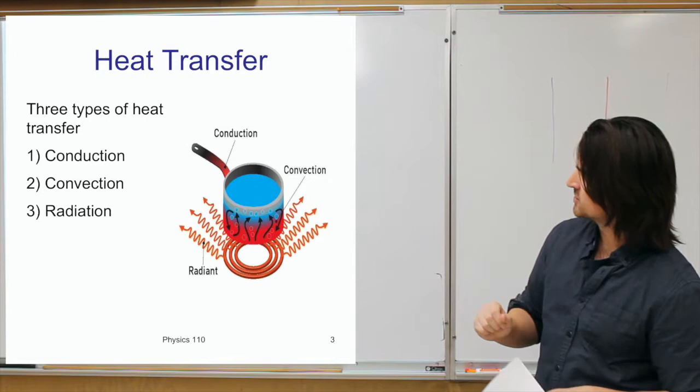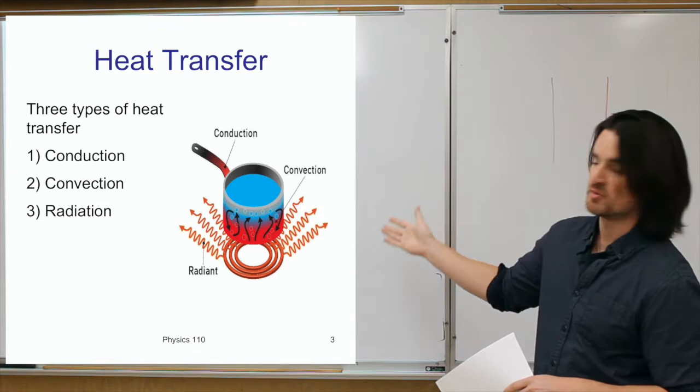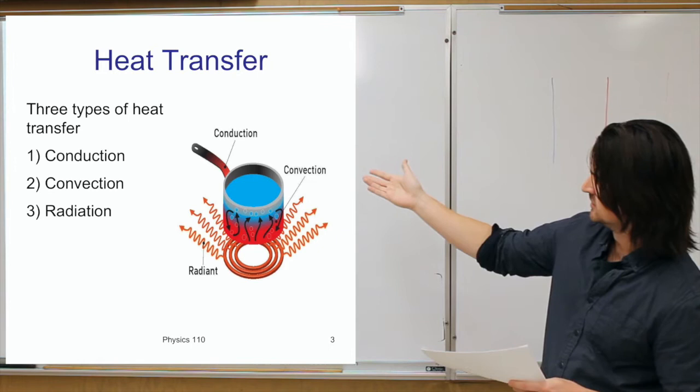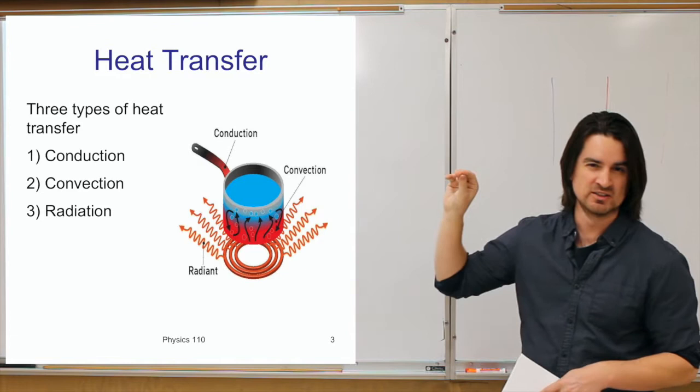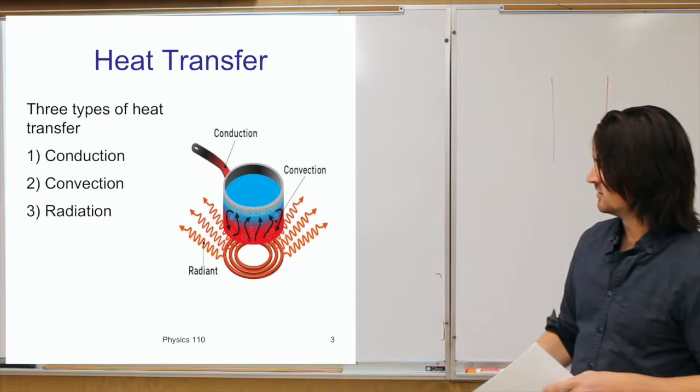And then there's conduction, where heat from the burner goes through the pan, the pan heats up, and the handle becomes hot. If you were to touch that handle, you would conduct heat directly from the handle into your hand. You could also think of conduction as sticking your hand into the pot and touching the water — you would conduct heat directly from the water to your hand. Not a great idea in either case.